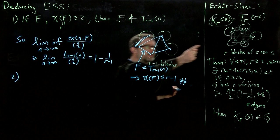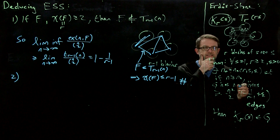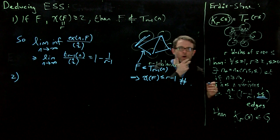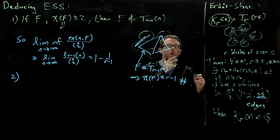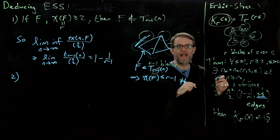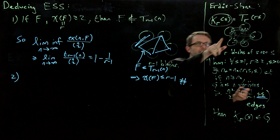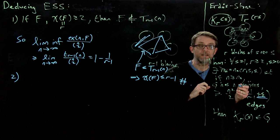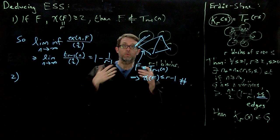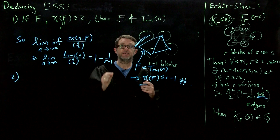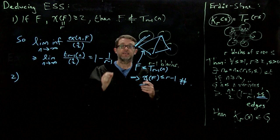For the second direction — the upper bound — the Erdős-Stone theorem says that if I move just a little bit beyond 1 minus 1 over r minus 1 proportion of edges, then I not only get a copy of K_r but I actually get the huge structure K_{r,s}. It's easy to see that if you give me any F with chromatic number r, I can embed F inside K_{r,s} as long as S is large enough. I take s equal to the size of the vertex set of F.